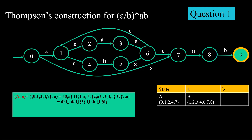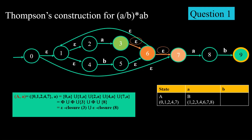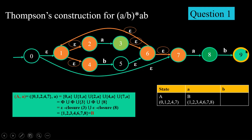eClosure(3): state 3 is included, plus all states reachable from 3 on epsilon — state 6, state 7, then 1, 2, and 4. For eClosure(8): state 8 is included and there are no epsilon moves from state 8. So the union gives us {1, 2, 3, 4, 6, 7, 8}. Since this set is different from set A, we name this new set as capital B.